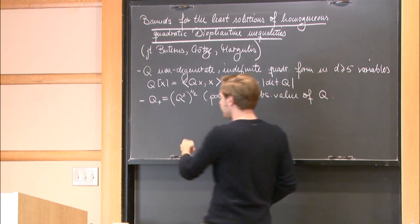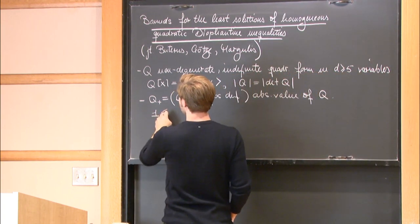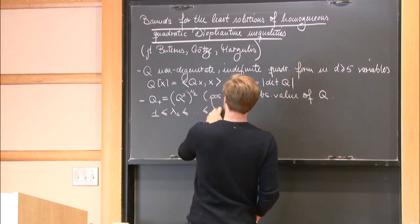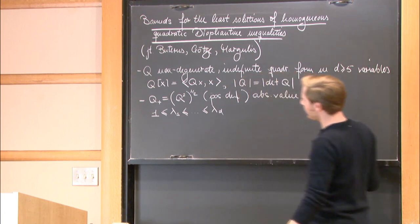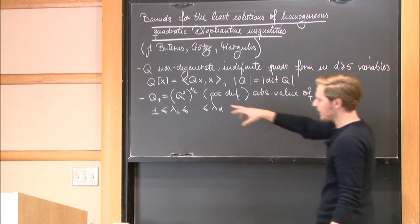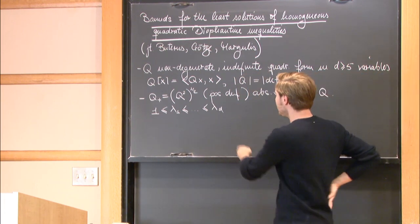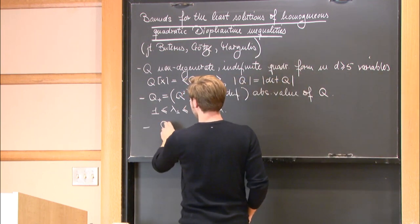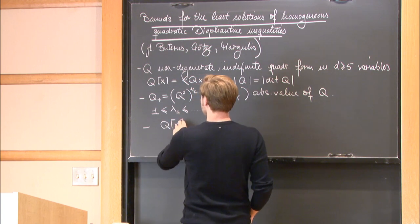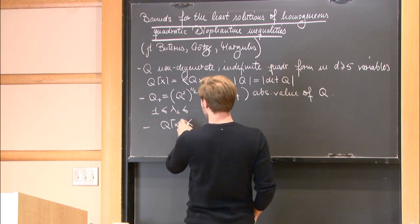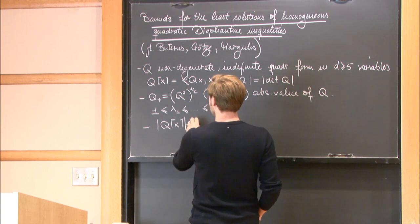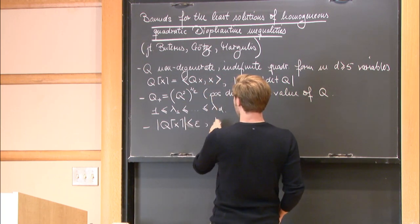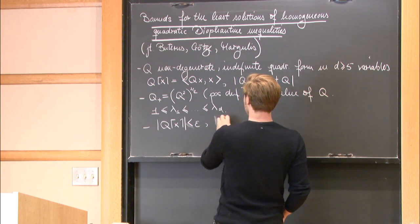For Q+, I'm going to assume that the eigenvalues of Q are positive, denoted by λ_1 to λ_t, and I assume they're greater than 1. The problem I'm interested in is finding non-trivial bounds for the solution of the inequality |Q(x)| ≤ ε, with x an integer vector.